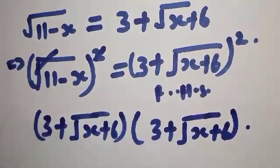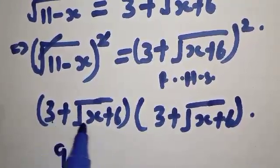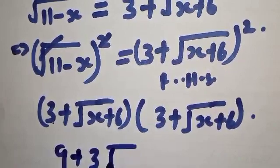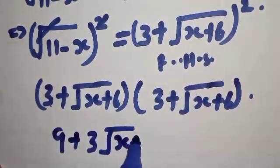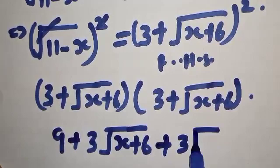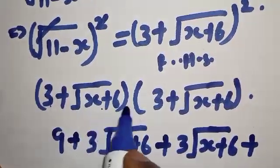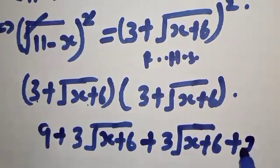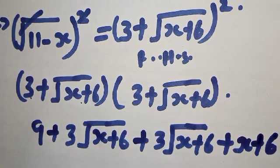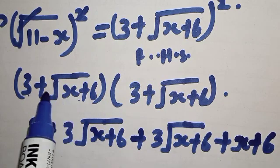The right hand side expands as: 3 plus square root of x plus 6, times 3 plus square root of x plus 6. That gives us 3 times 3 equals 9, then 3 times square root of x plus 6, plus square root of x plus 6 times 3, plus square root of x plus 6 times square root of x plus 6, which gives x plus 6.